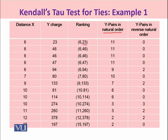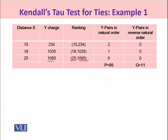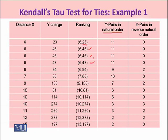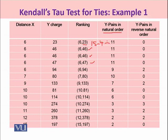For the first Y value of 23, we count how many values below it are larger than 23. There are 15 total observations larger than 23. However, since the value 6 appears 5 times in X (a tied group), those 4 additional comparisons within the tied group are subtracted. So 15 minus 4 gives us a corrected value of 11 for this tied group. Because tied observations receive the same rank, you assign the value 11 to all observations where X equals 6.